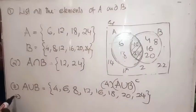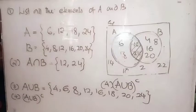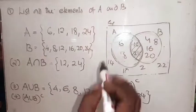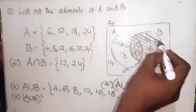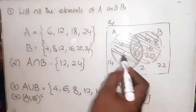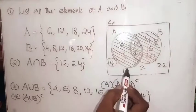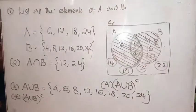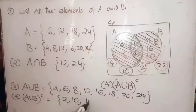The fourth question is the complement of A union B — that means NOT (A union B). First, A union B covers the full A and B region. The elements not in A union B are 2, 10, 14, and 22. So (A union B)' = {2, 10, 14, 22}.